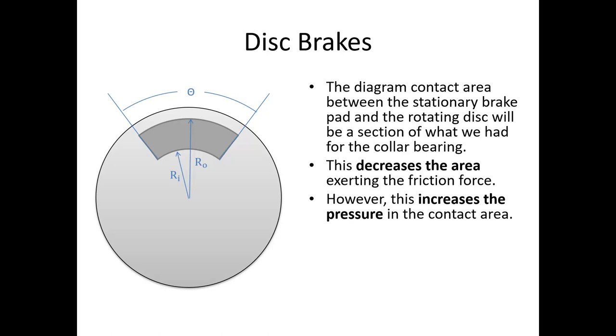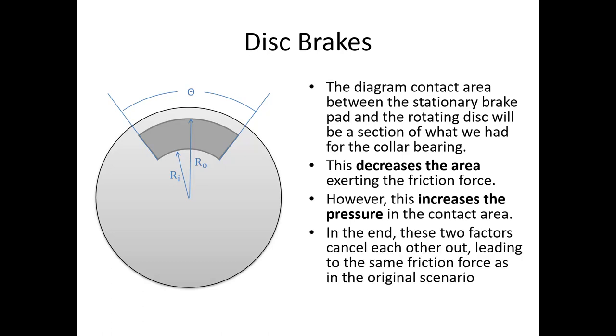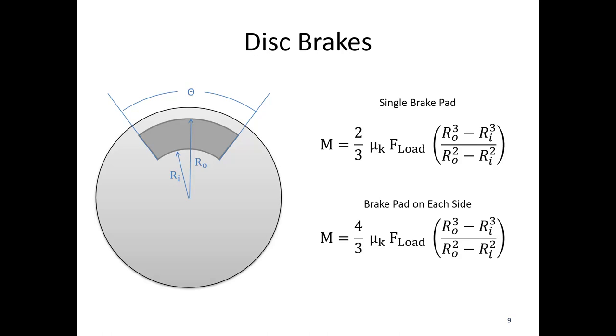What this means in the end is that the two factors actually end up canceling each other out, leading to the same friction force as we had in the original scenario. So a single brake pad on one side is still the same: 2/3 times μk times the load force times (router³ - rinner³)/(router² - rinner²).